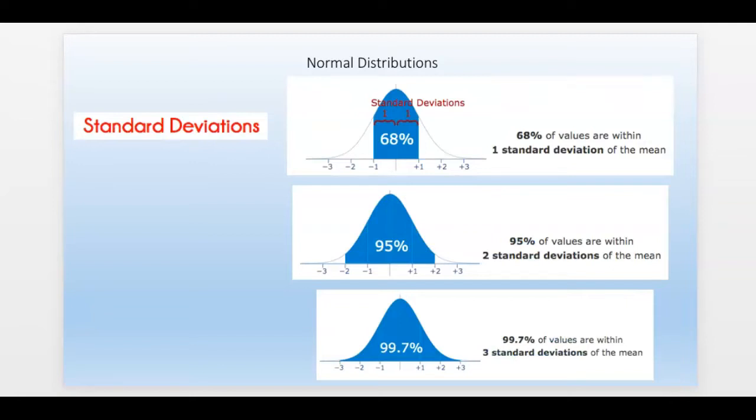Now this is very important right here. 68% of the data values fall within one standard deviation of the mean when we have a normal distribution. 95% of the values are within two standard deviations of the mean. Again, almost all of them, 99.7%, are within three. There's always a chance that way outside there are some, so it's hard to say all of them are three standard deviations, but pretty close to all of them.